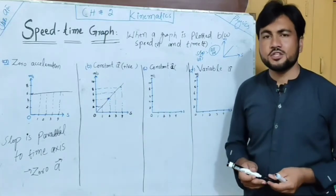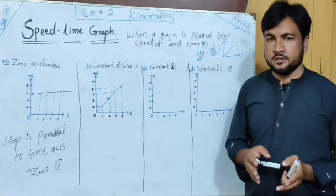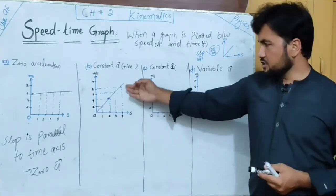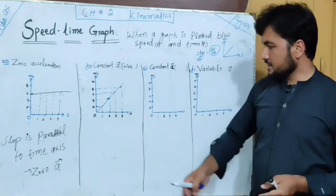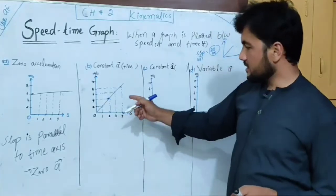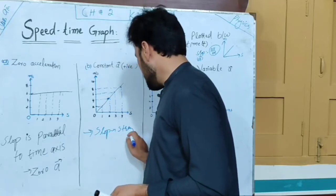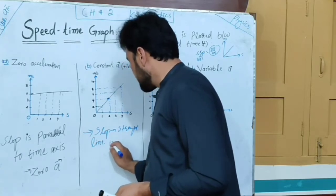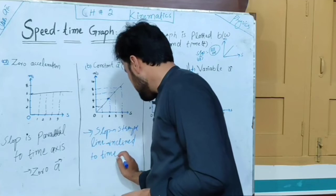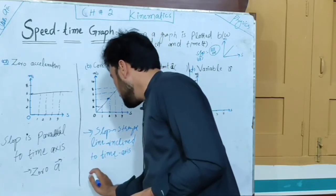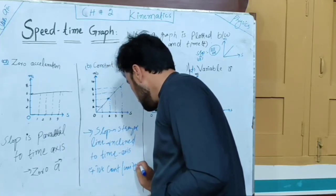If the object has positive acceleration, the body's speed will increase. The constant acceleration is positive. The graph line is inclined to the time axis — it is a straight line inclined to the time axis. This represents positive constant or uniform acceleration.